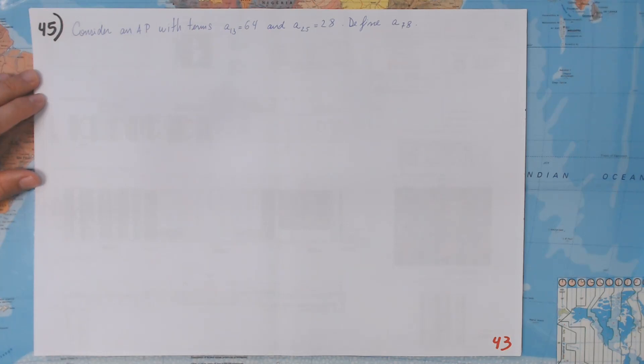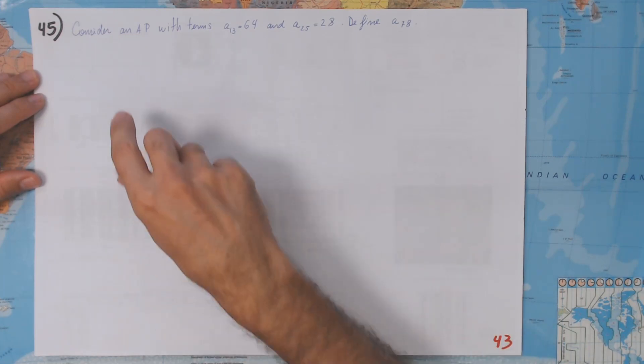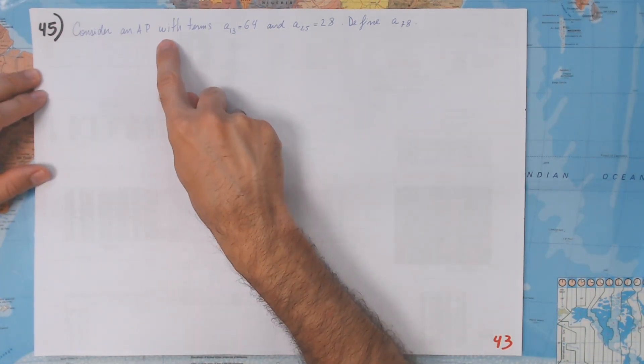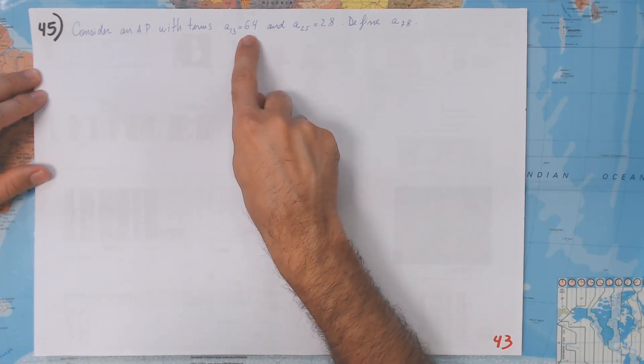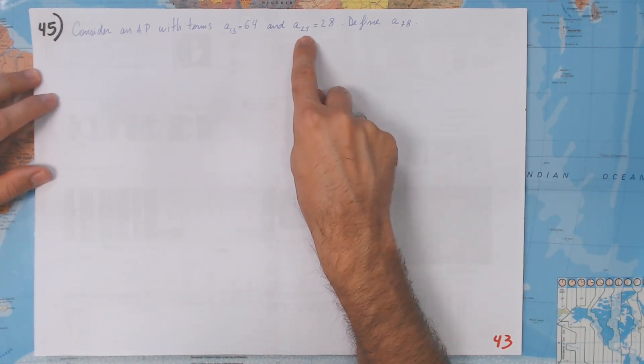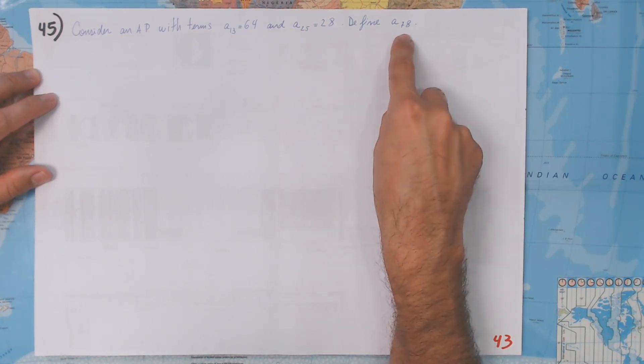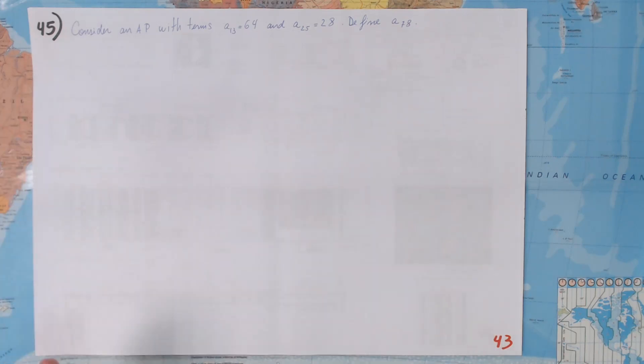Hi, hello, welcome back. Now let's see page 43, exercise 45. Consider an arithmetic progression with terms a₁₃ equals 64 and a₂₅ equals 28. I want to know a₇₈.